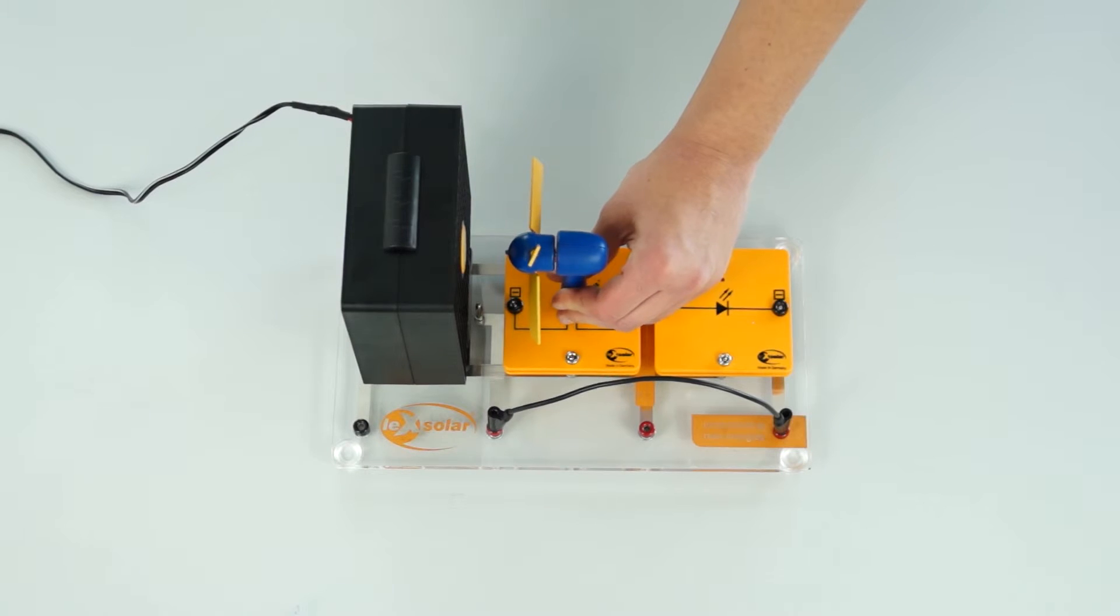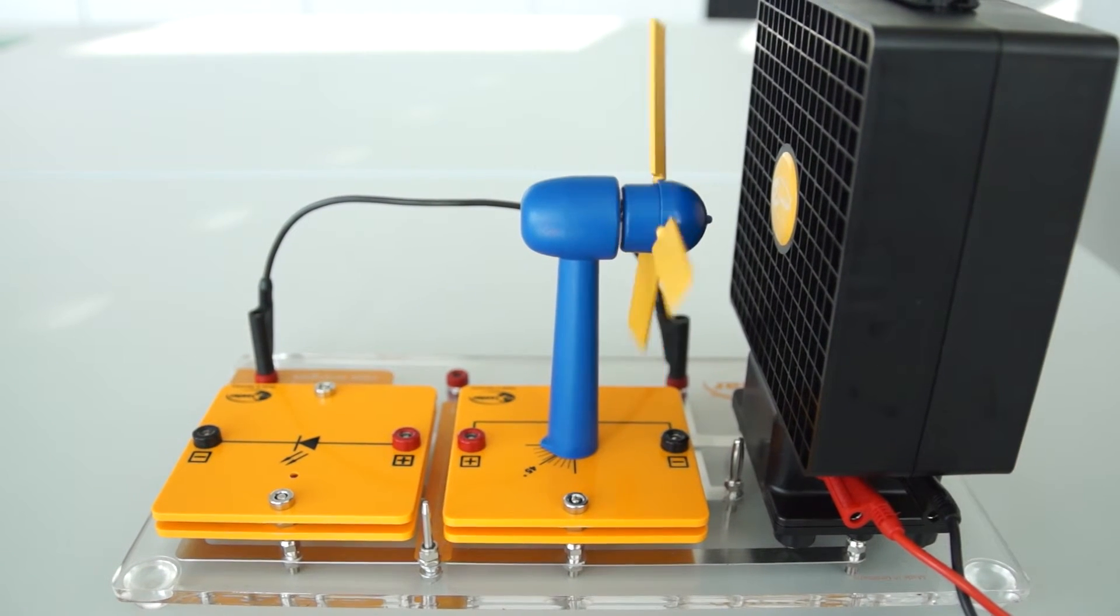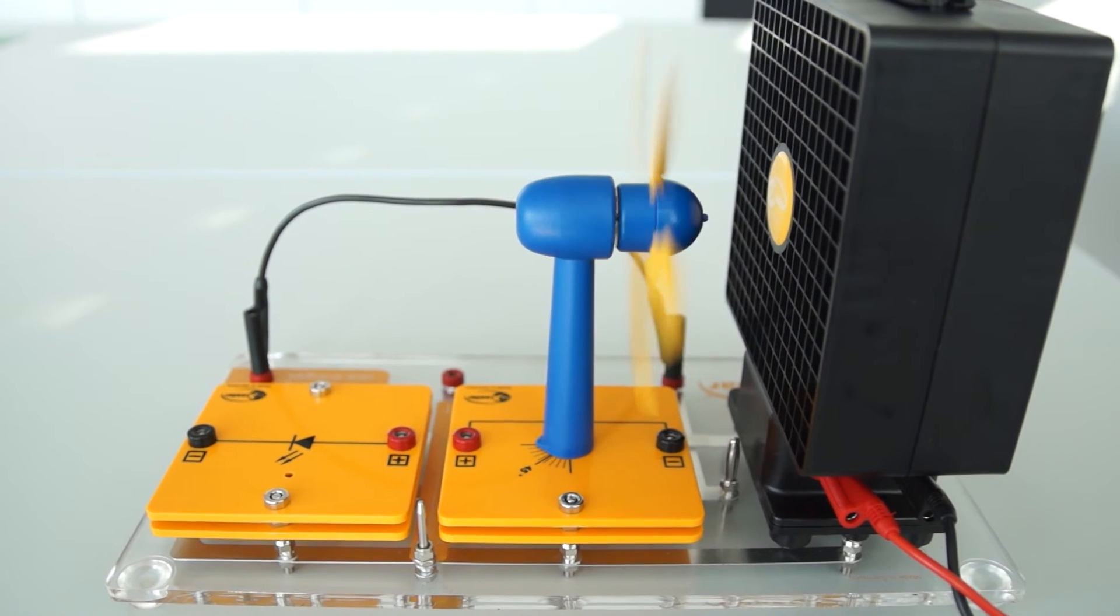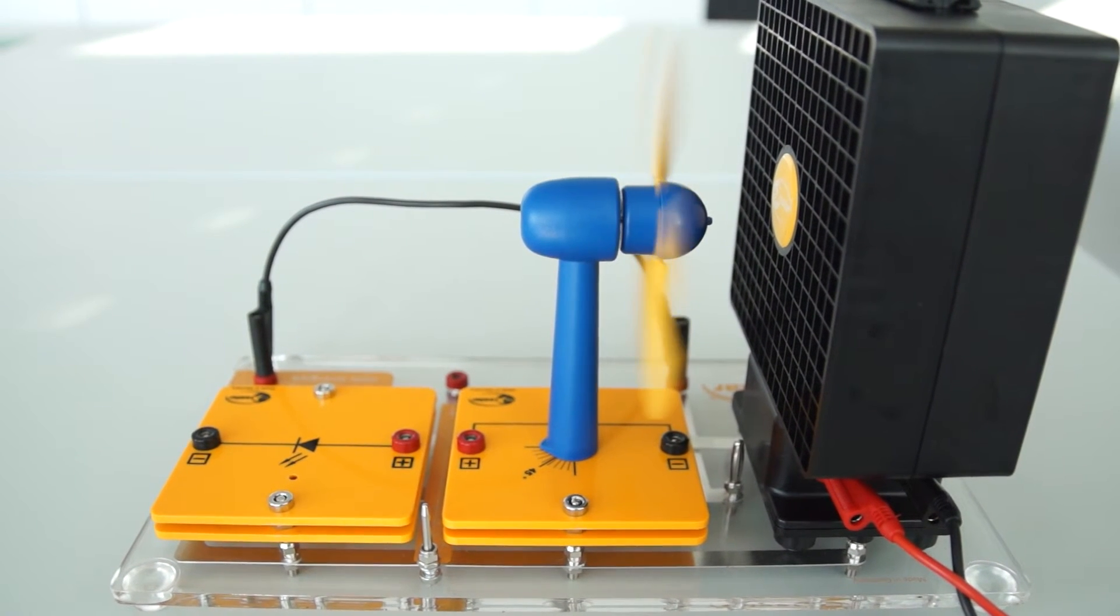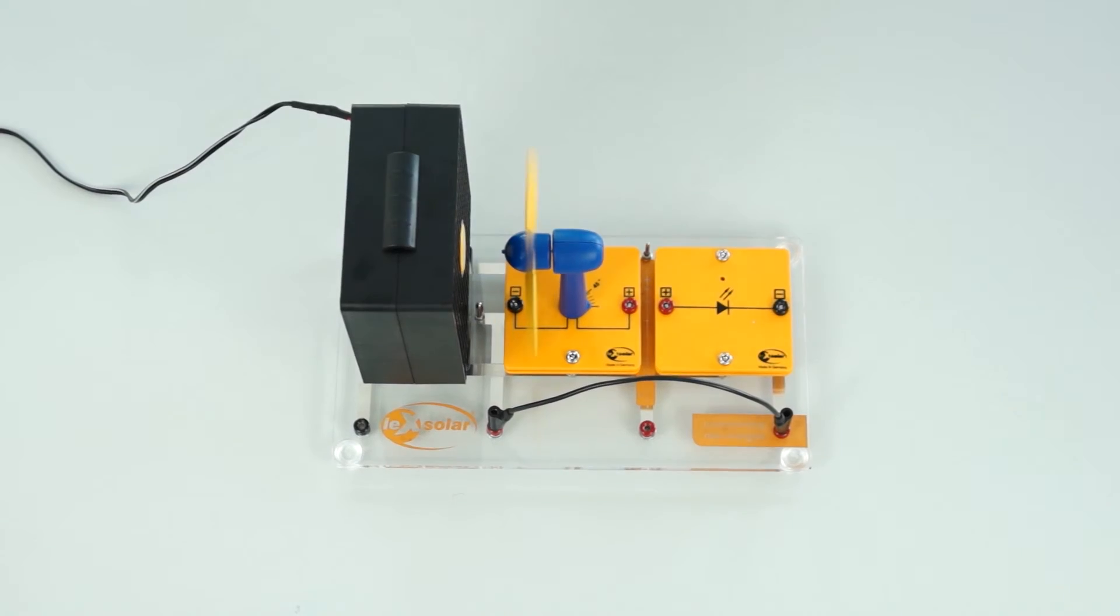We then observe what happens when we turn on the wind machine. The wind turbine starts to turn but the LED does not light up. The output power of the wind turbine is significantly weaker with the flat blade profile than with the optimized blade profile. This is the reason why the LED is not lighting up with the flat blade profile.